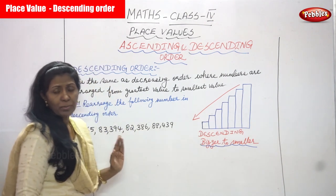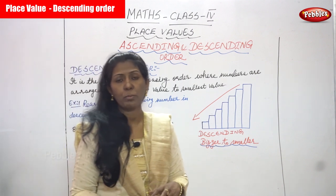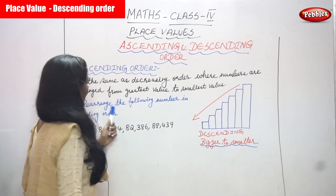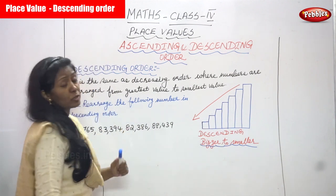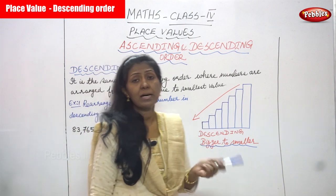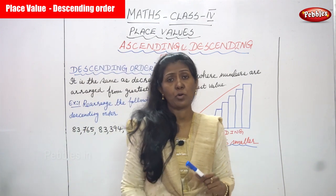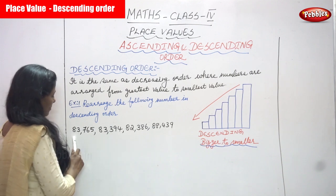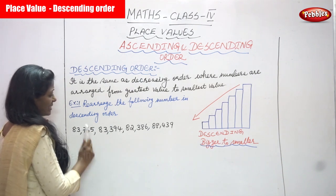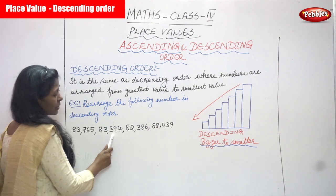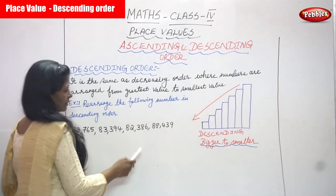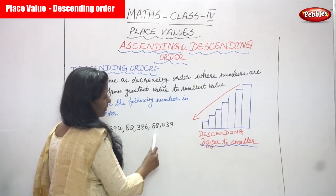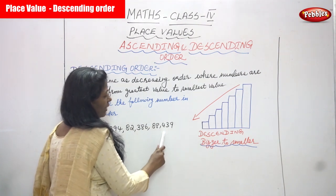Now we are going to solve a problem. If we solve the problem, you can understand the concept very clearly. The question is: rearrange the following numbers in descending order. The numbers are: 83,765; 83,394; 82,386; and 88,439.